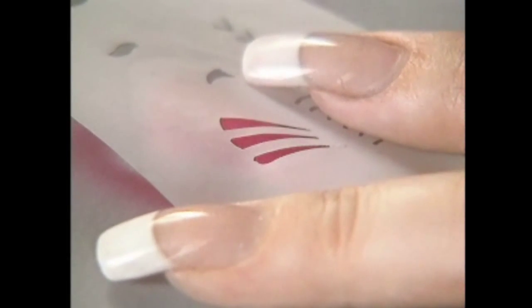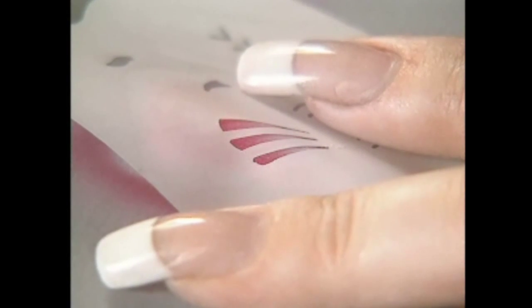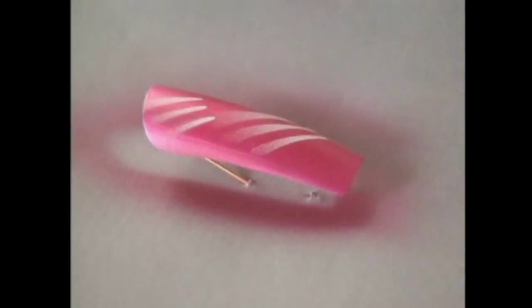Again, curve the stencil to the nail, spray slowly, build up your color. I like to spray darker at the point and let it kind of blow up the nail—gives it a softer look.